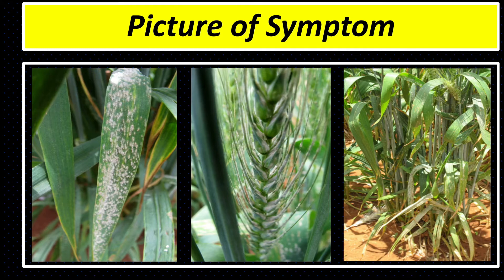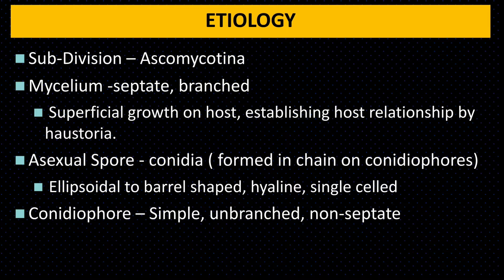जब disease बहुत ज्यादा मात्रा में आती है तो जो grain है उनका size कम हो जाता है और yield कम हो जाता है। अब देखते हैं etiology of powdery mildew fungus।